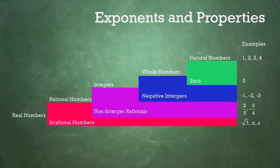A rational number is any number that can be written as one whole number divided by another whole number. The irrational numbers are numbers that cannot be written as one whole number divided by another whole number.